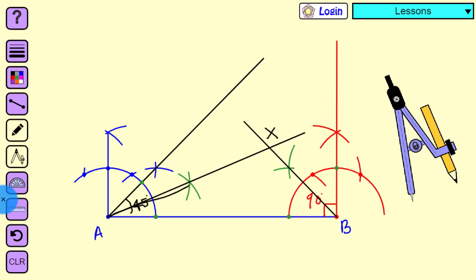Now our next step is to draw perpendicular bisectors of AX and XB.